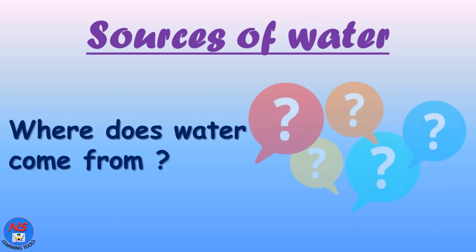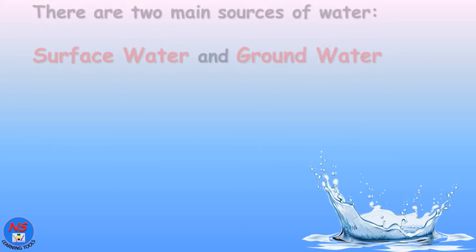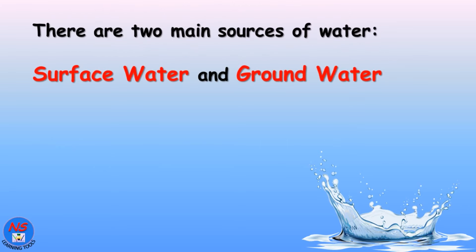Where does water come from? All living things need water to live. We get water from rain, pond, river, well, etc. There are two main sources of water: surface water and groundwater.